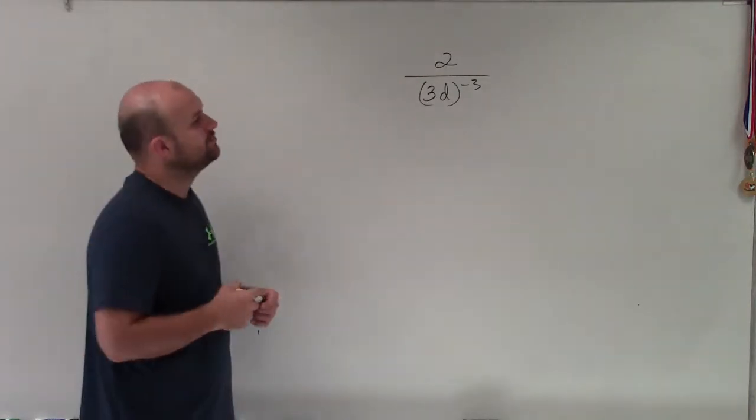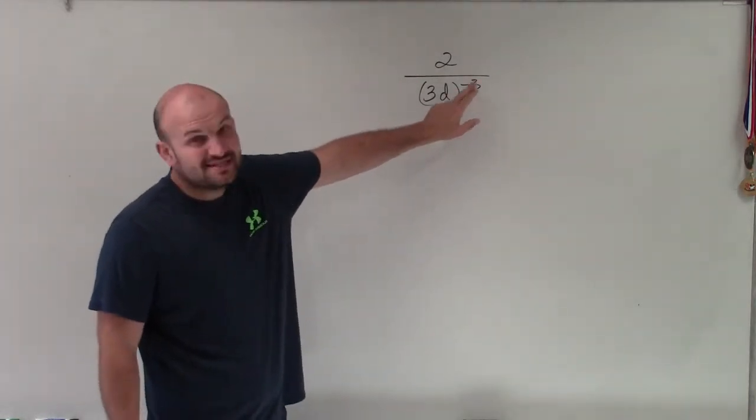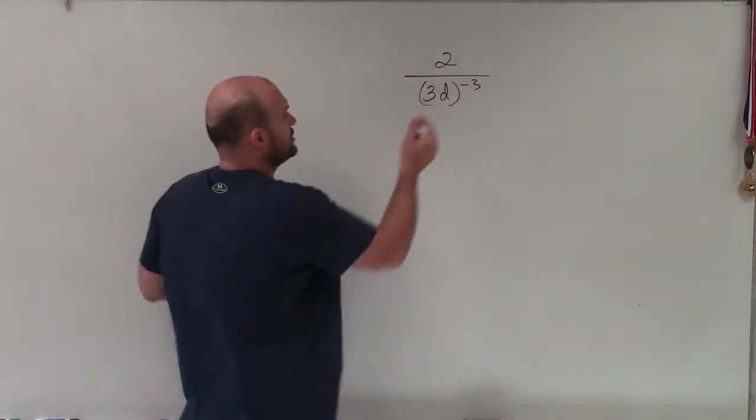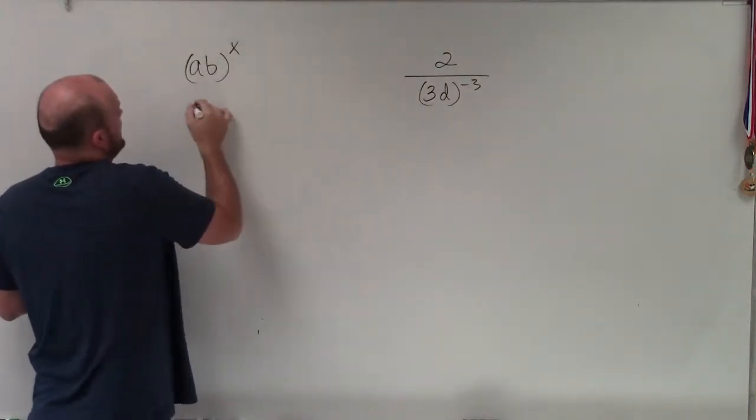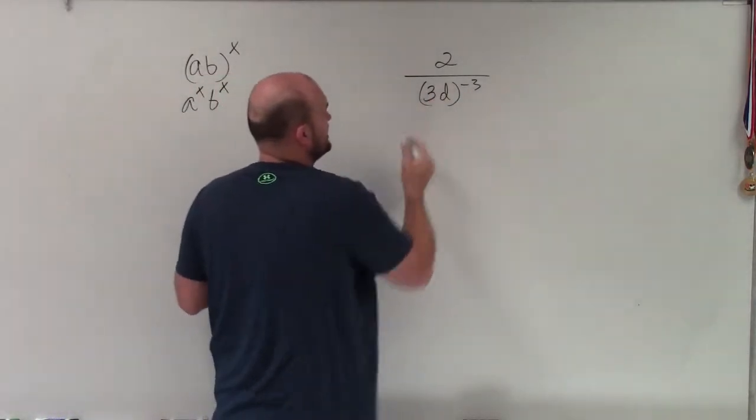When simplifying using the rules of exponents, basically what I'm going to want to do is apply my power. Even though I see this as a negative exponent, I'm going to want to apply my power to product rule first. So doing that, remember if I have a times b raised to the x, that is equal to a to the x times b to x. So I'm just going to distribute the negative 3.